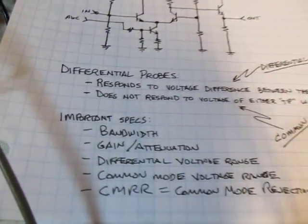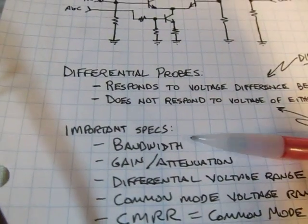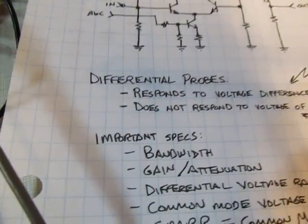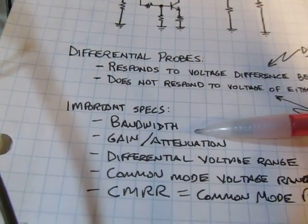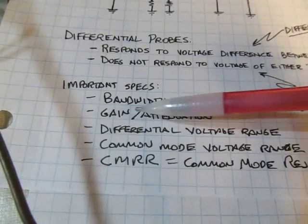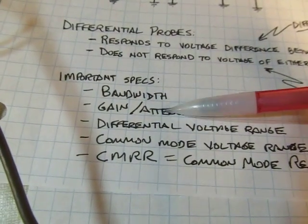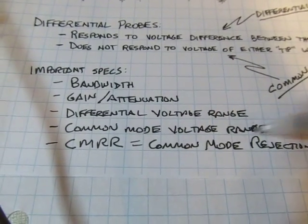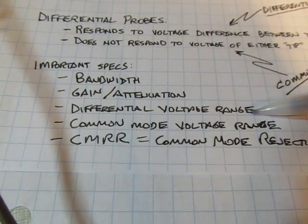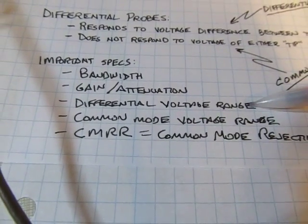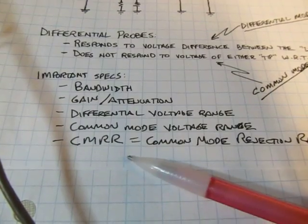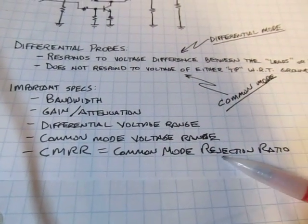One more thing to think about is some important considerations with differential probes. Obviously, bandwidth is a big consideration. It is an active probe. So you do have to worry about what its bandwidth is and also some other considerations. The probe is going to have either some gain or attenuation associated with it. You also have to take care to look at what the differential voltage range and the common mode voltage range is for the probes to ensure that in your application you don't exceed either of those. Then there's one more parameter which is kind of important. It's called the common mode rejection ratio.